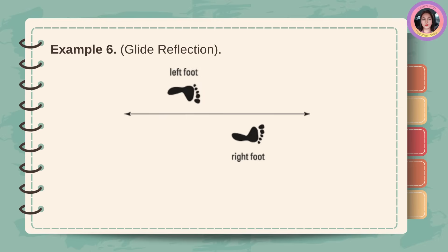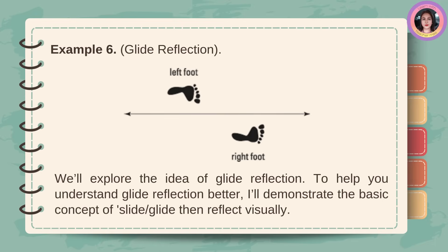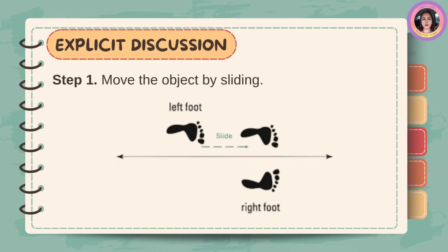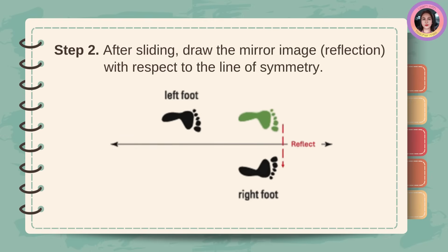Example number 6: glide reflection. We have a left foot and a right foot. We'll explore the idea of glide reflection. To help you understand glide reflection better, I'll demonstrate the basic concept of slide, glide, then reflect visually. Step 1: move the object by sliding. Step 2: after sliding, draw the mirror image or reflection with respect to the line of symmetry.